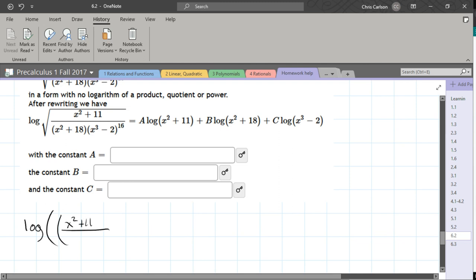So we have x squared plus 11 in the numerator, x squared plus 18 times x cubed minus 2 to the 16th power. All of this raised to the 1 half power. Alright, step one.